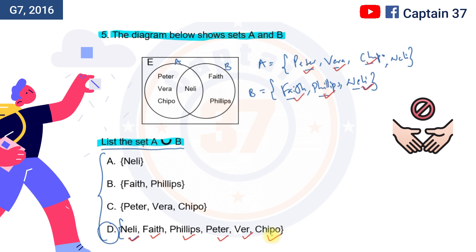And this is how come we conclude that A union B, the set A union B comprises of Nelly, Faith, Phillips, Peter, Vera, and Chippo. The answer, to repeat, the answer to question 5 is D.